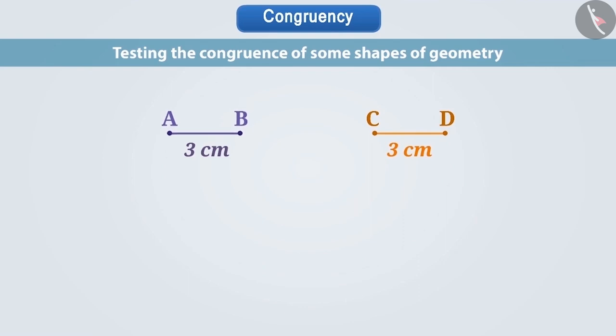as here, the line segment AB is equal to 3 cm and the line segment CD is equal to 3 cm. Then they cover each other completely. In such a situation, they are congruent.